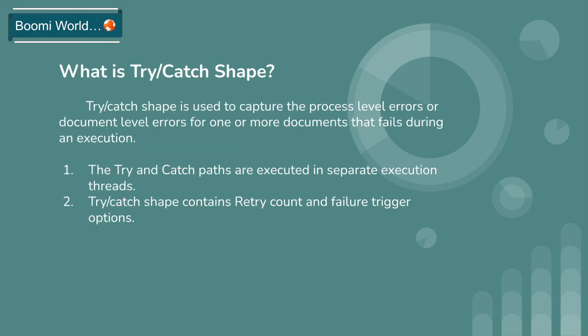First, let's look into what is Try-Catch shape. Try-Catch shape is used to capture process-level errors or document-level errors for one or more documents that fail during execution. The Try-Catch paths are executed in separate execution threads. Try-Catch shape contains two key options: retry count and failure trigger.